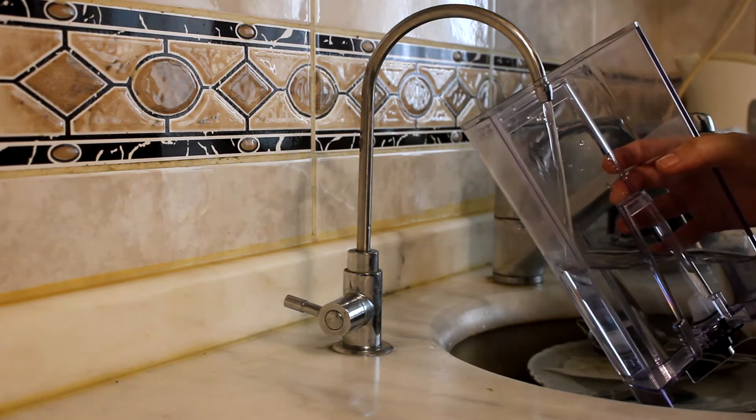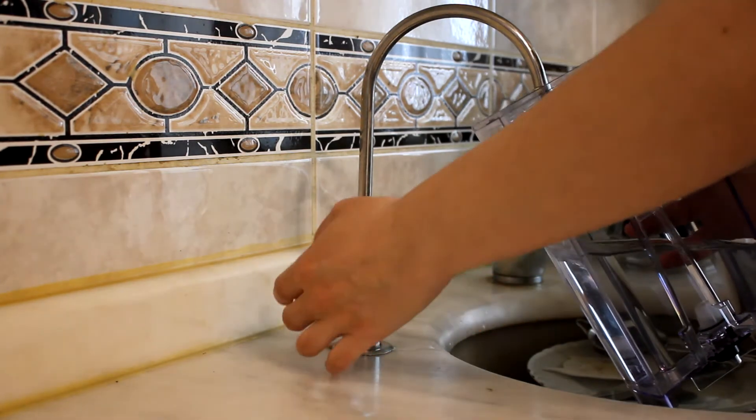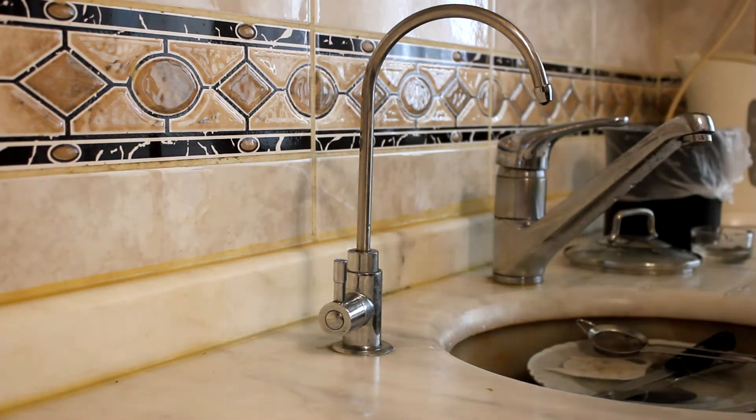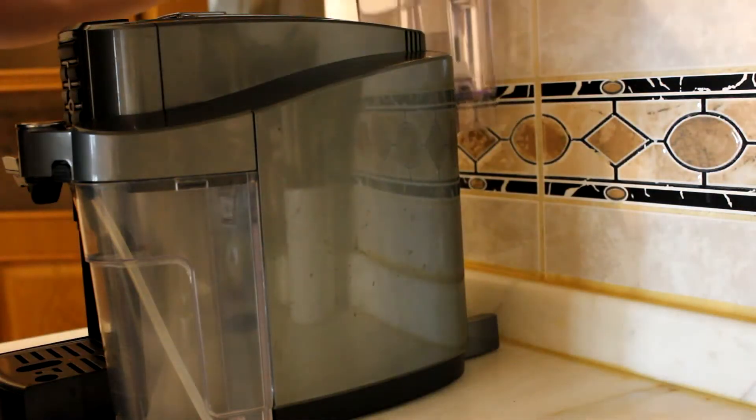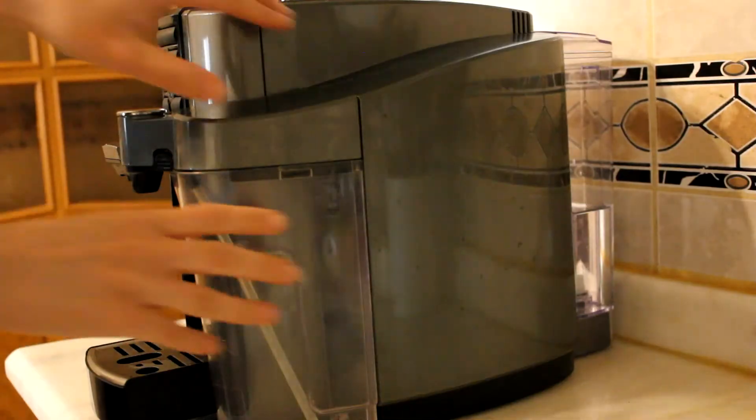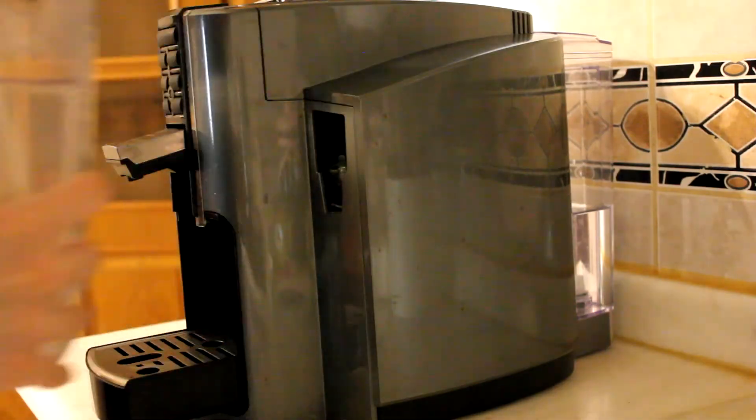The machine consists of a very simple system. You complete the first process by putting a certain amount of purified water in the water tank behind it. One of the most important factors in choosing these machines is, of course, automatic milk frothing by the machine.